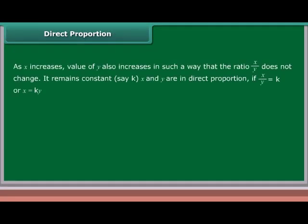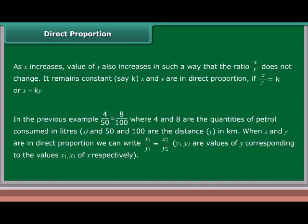Direct proportion: As x increases, the value of y also increases in such a way that the ratio x upon y does not change — it remains constant, say k. x and y are in direct proportion if x upon y is equal to k, or x is equal to k times y. In the previous example, 4 upon 50 is equal to 8 upon 100, where 4 and 8 are the quantities of petrol consumed in liters (x), and 50 and 100 are the distances (y) in kilometers.